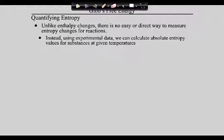You can actually measure how screwed up something is and quantify it in joules per mole. It's not kilojoules per mole — it's joules per mole. When we do enthalpy, we talk about kilojoules per mole because they tend to be big energies. When we talk about entropies, we're talking about joules per mole because disorder tends to be on a smaller scale.